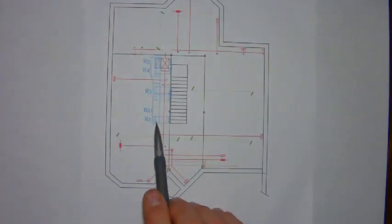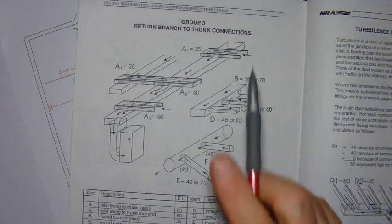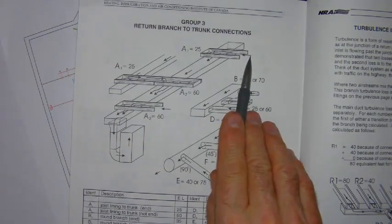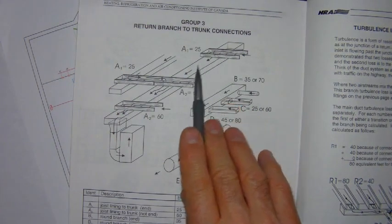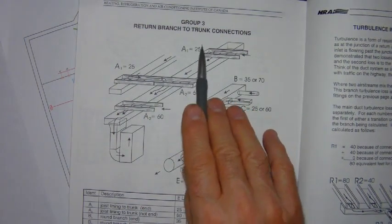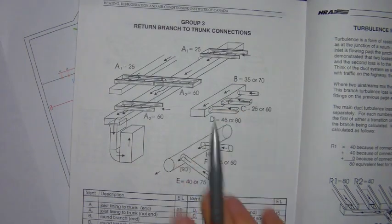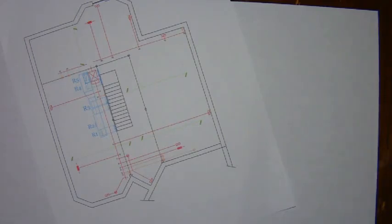Now the air needs to enter the duct at this location. And if you recall in group three, when the air from the furthest return air away from the furnace enters the duct, there is an associated equivalent length of 25 feet. And so since R1 is at the end of the duct,